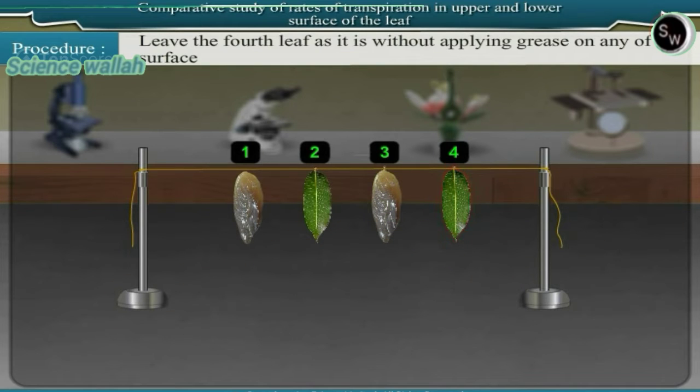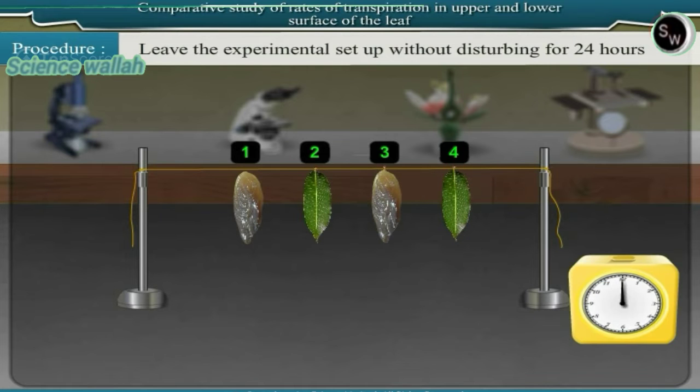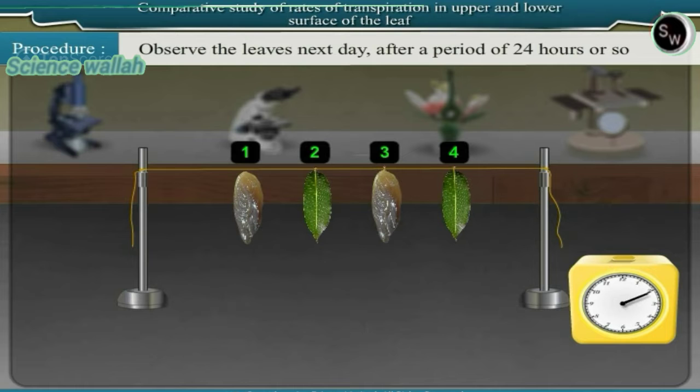Leave the fourth leaf as it is without applying any grease on any of its surfaces. Leave the experimental setup without disturbing for 24 hours. Observe the leaves next day after a period of 24 hours.